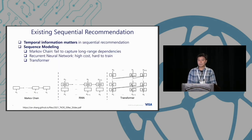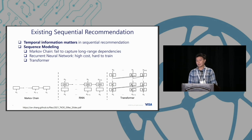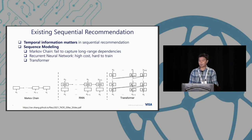There are a lot of sequential recommendation models. The first is the Markov chain, a very simple one, but it fails to capture long-range dependencies among item sequences. There are also traditional recurrent neural networks — straightforward but hard to train and cannot be parallelized. Recently, people have talked about transformers and how to apply them to sequential recommendations. The performance is pretty good and they can be trained in parallel.